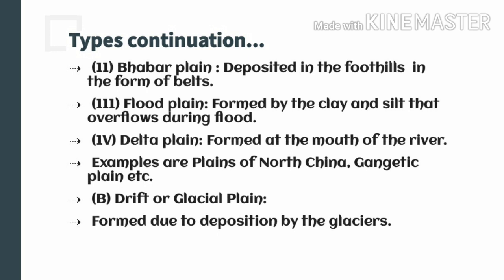The next one is the bahbar plain — it is deposited in the foothills in the form of a belt. The bahbar is similar to the piedmont but it is in the shape of a belt rather than a fan. The third one is the flood plain, formed by the clay and silt that overflows during floods. During a flood the river overflows its banks, and when the river subsides, the sand and silt left behind creates a flood plain. The next one is the delta plain, formed at the mouth of the river where deposition takes place in the shape of a triangle.